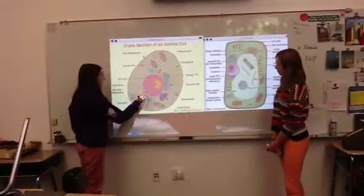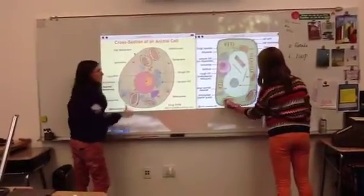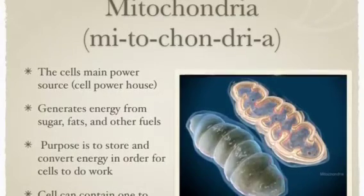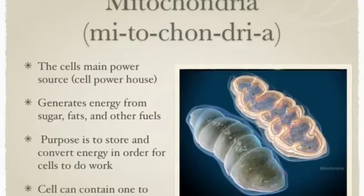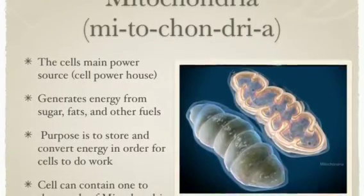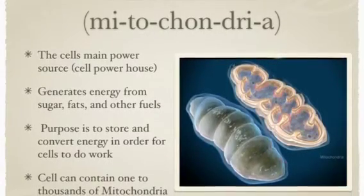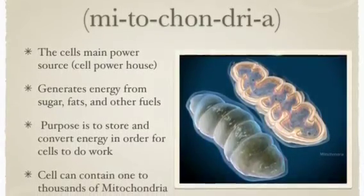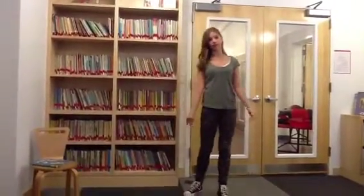This is where the mitochondrion is in an animal cell, and this is where the mitochondrion is in the plant cell. The mitochondria is the cell's main power source, also called the cell powerhouse. They generate energy from sugar, fats, and other fuels. The purpose is to store and convert energy in order for cells to do work. Cells can contain one to thousands of mitochondria. Imagine this room as a plant or an animal cell — these lights would act as the mitochondria because they are the power source of the room.